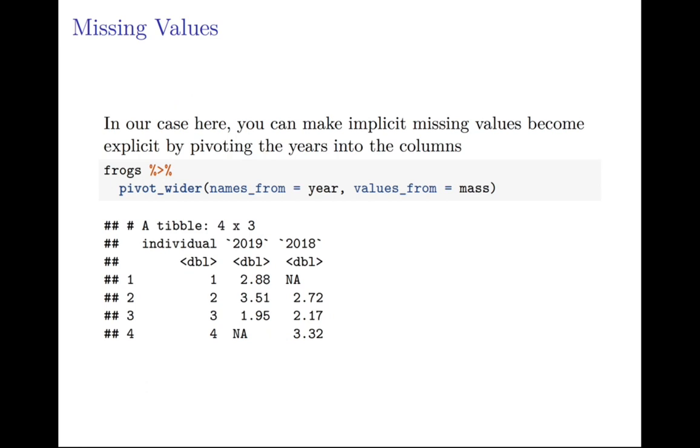In our case here, you can make implicit missing values become explicit by pivoting the years into the columns. You can take your frogs and pivot it wider with the names from years and the values from mass. You can create a new tibble where you have the years 2019 and 2018 with your individuals each as a row. You see that in fact, while it looked like there was only one NA before, there were actually two - one was just implicit, but now they're both explicit.